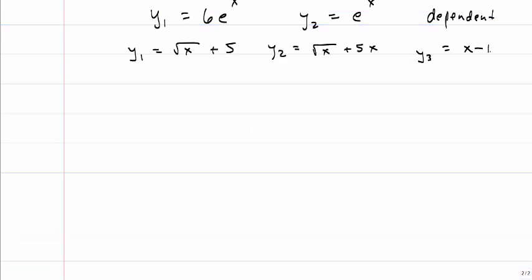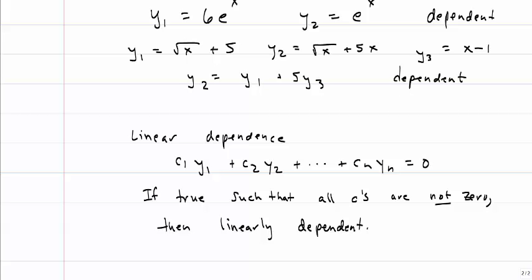However, this set of three solutions isn't as straightforward. I can write y2 in terms of y1 and 5 times y3, so these three are also dependent. So if I have a group of solutions,